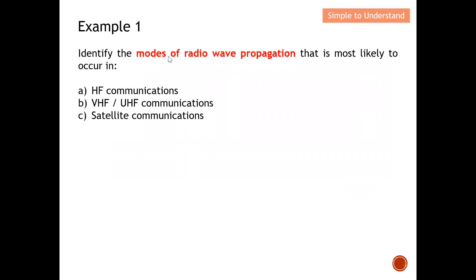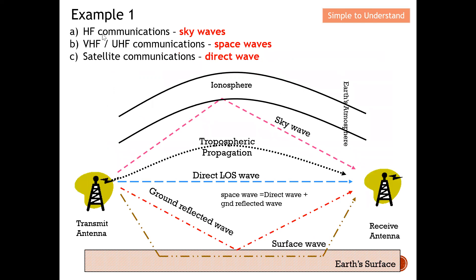The first question: identify the modes of radio wave propagation most likely to occur in HF (high frequency) communication, VHF (very high frequency) and UHF (ultra high frequency) communication, and satellite communication. For HF communication, the answer is sky wave. Sky wave is where the radio wave is aimed at a certain angle, propagates toward the sky, reaches the ionosphere, reflects, and comes back to earth.